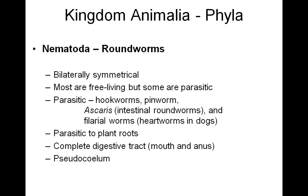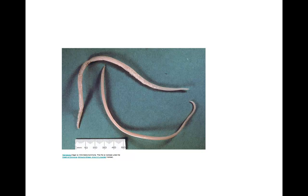Nematodes have a complete digestive tract beginning at the mouth and ending at the anus. But they do not have a true body cavity, so they have what is called a pseudocoelum. Here's an example of a nematode — my roundworm — with a complete digestive tract having both a mouth and anus. They are surrounded by a hard, thickened cuticle as well.